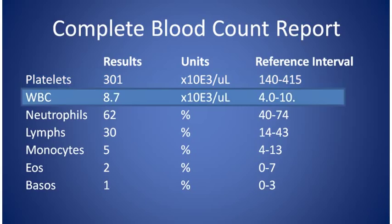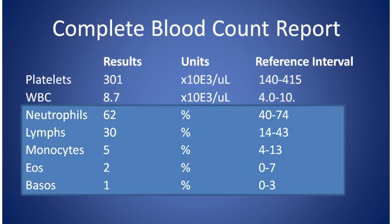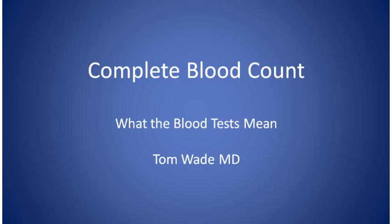The white blood cell count, the WBC, can be abnormal — either high or low — in different diseases. A high white count is often a sign of infection, as the white blood cells are part of the body's immune system. There are five different kinds of white blood cells: neutrophils, lymphocytes, monocytes, eosinophils, and basophils, each with different functions in the body's fight against disease.